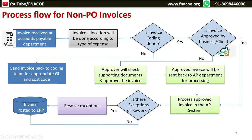Once invoices get allocated as per expense type — and by expense type I mean the different types of expenses within non-PO — these could be utility bills, government or tax bills, employee reimbursement bills, and other expenses.